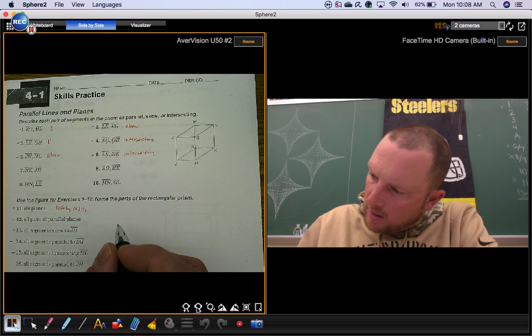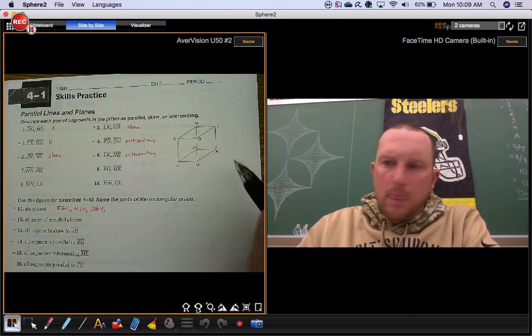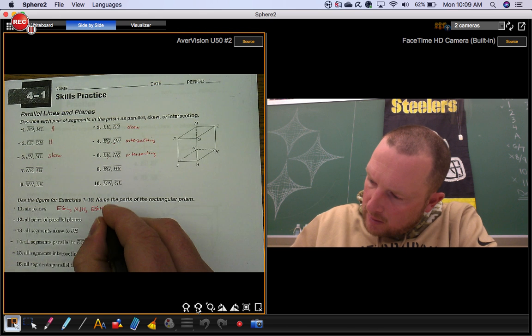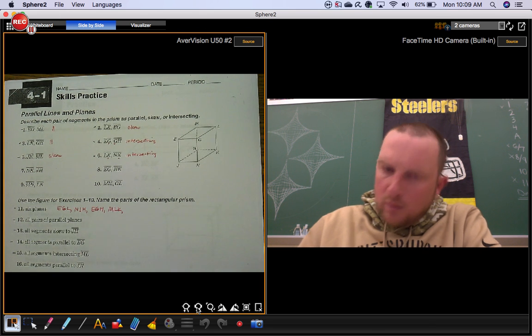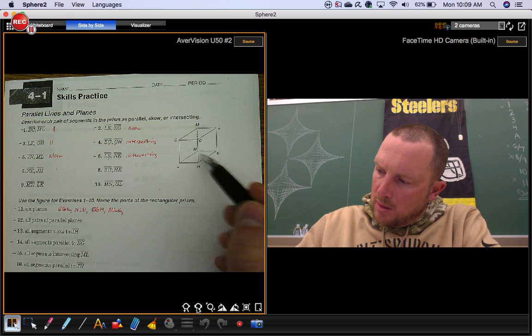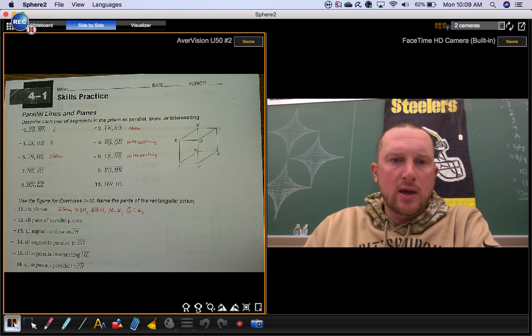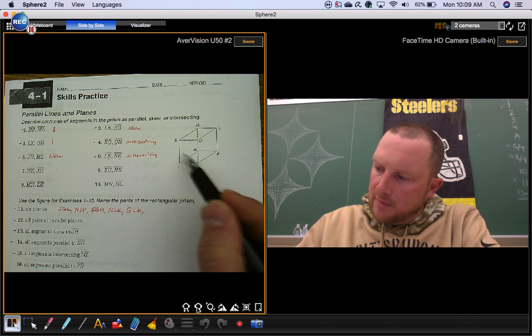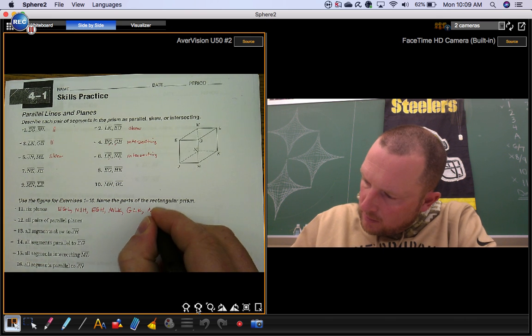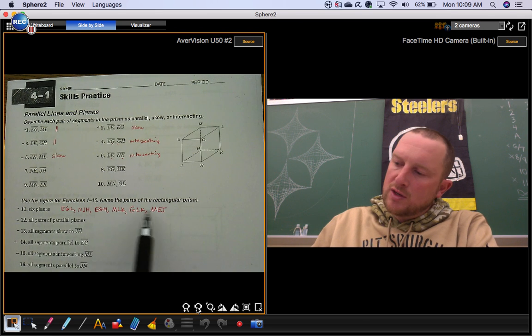Front plane, we'll name that plane EGH. And then the back plane, we'll name it MLK. Plane on the right, we'll name that plane GLK. And then the plane on the left, MEJ. Those are your six planes.